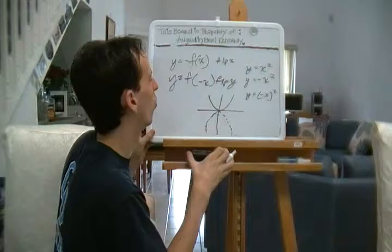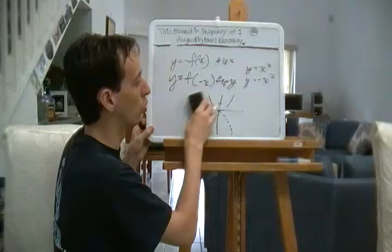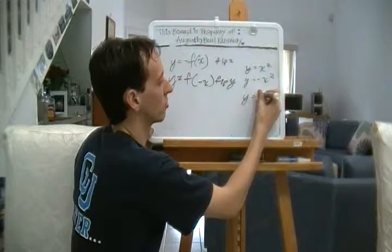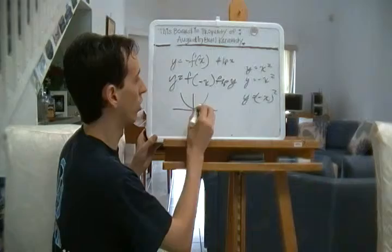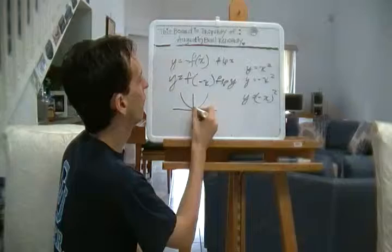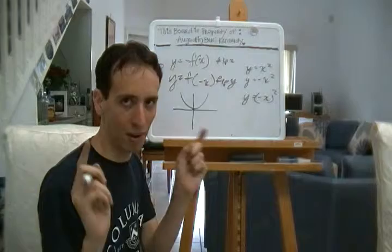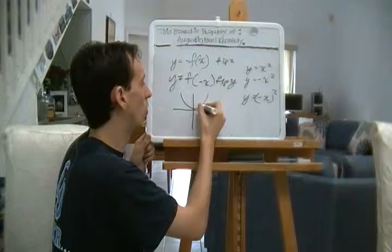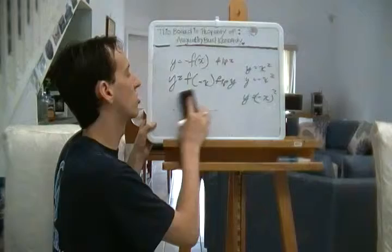If we have Y equals negative X, parentheses squared, that's going to be different. That's going to be shifting it around Y. That does work. Y equals negative X squared does indeed mean that we're going to rotate around the Y axis. The problem is that Y equals X squared is an even function, which means it's the same on either side of the axis.